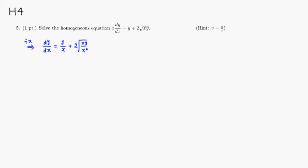By canceling x on top and one of the x down here, you can see that we have v. So v is y over x, so here that's just going to be v plus 2 times square root of v.